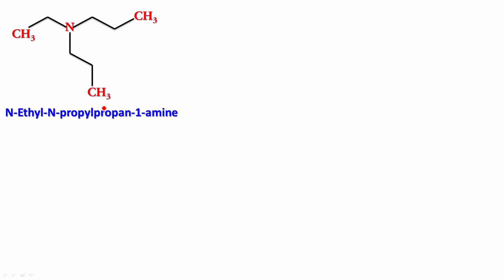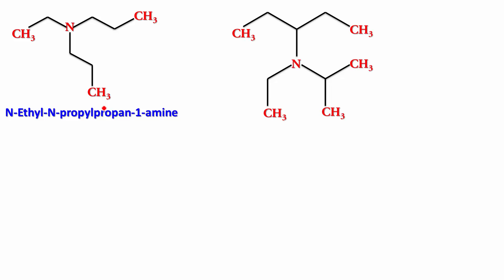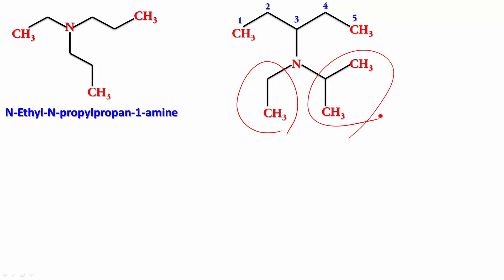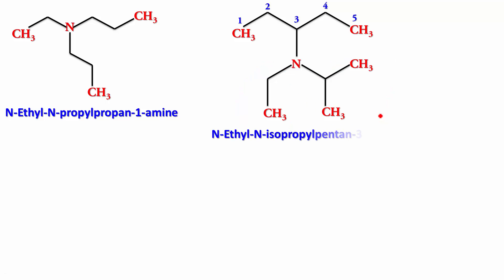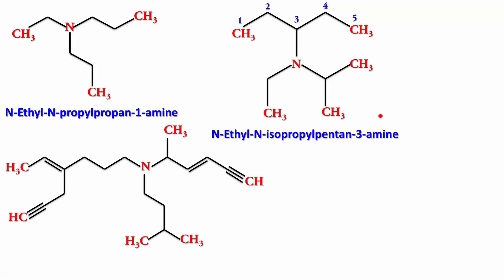Try one more. Find the parent here — maximum number of carbon atoms. Numbering the parent. The result is N-ethyl, N-isopropyl, penten-3-amine. And now let's try something really complicated — pause and write the name, then play it back to check your answer.